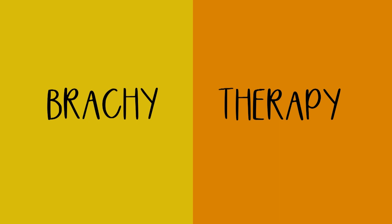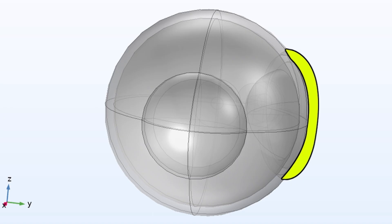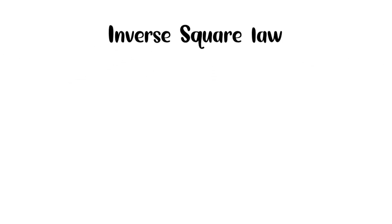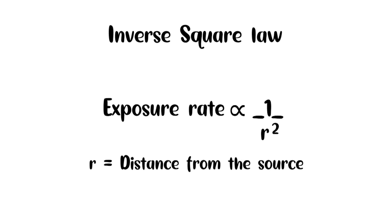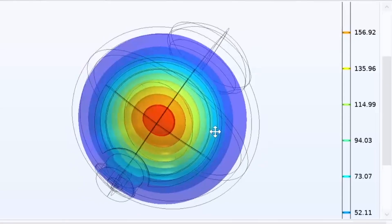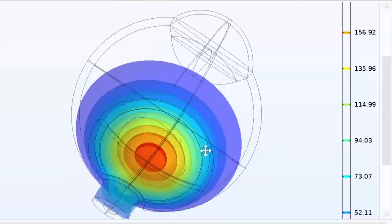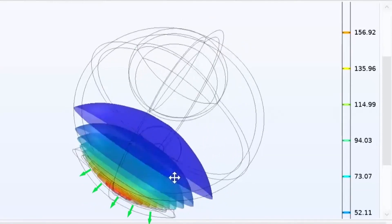Brachytherapy literally means short therapy in Greek, referring to the distance between the radiation source and the treatment target. It follows the inverse square law, where exposure rate is directly proportional to 1 by R squared, i.e., the distance from the source. This means that the dose delivered is specifically targeted to the tumor with least effect on the adjacent normal tissues.